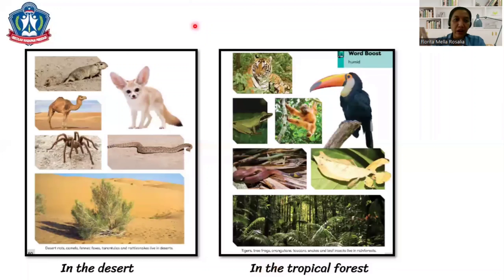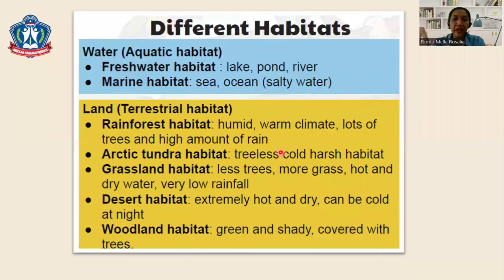In the desert you can have rat, camel, tarantula, rattlesnake, and fennec fox. While in the tropical forest you have snakes, tiger, orangutan, and other insects. Different habitats will have different environments.